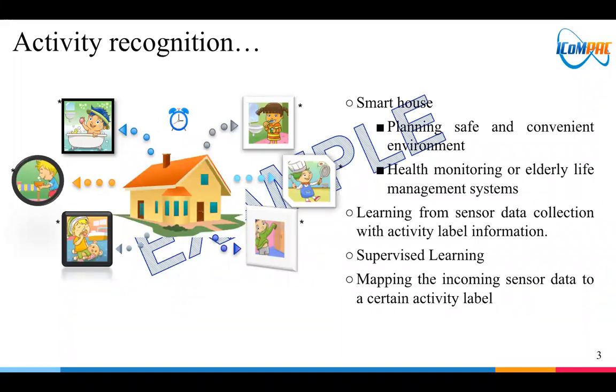So first, starting with introduction, one of IoT applications is smart house system. In this system, we can plan to build a safe and convenient environment or help monitoring an elderly life management system.